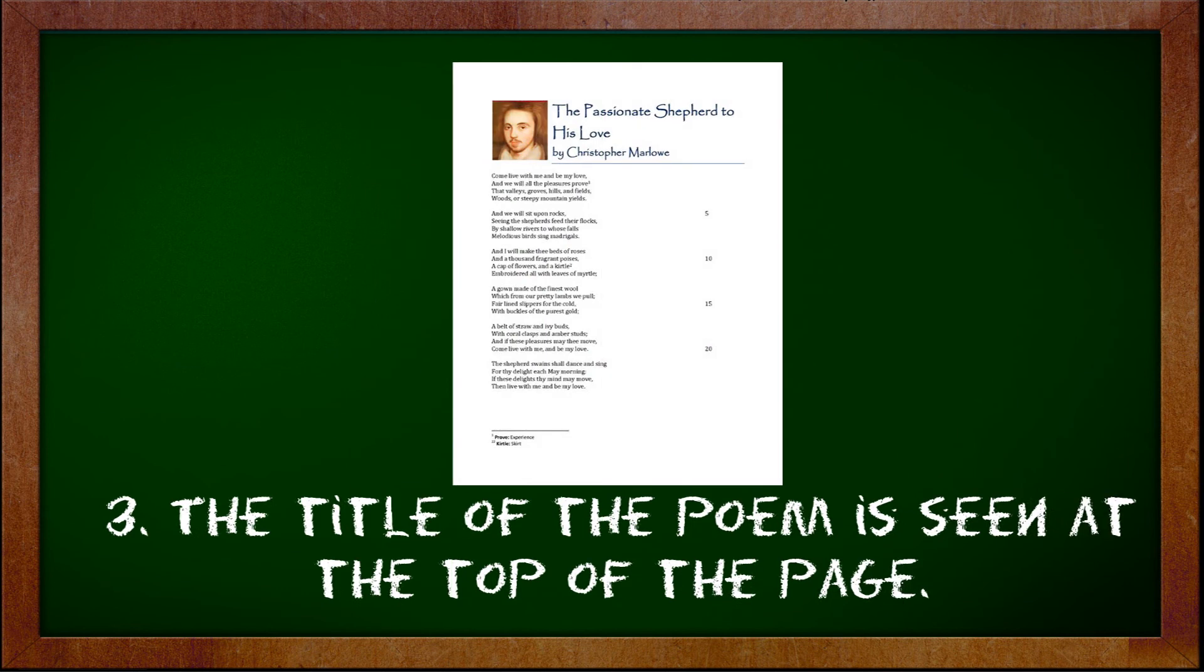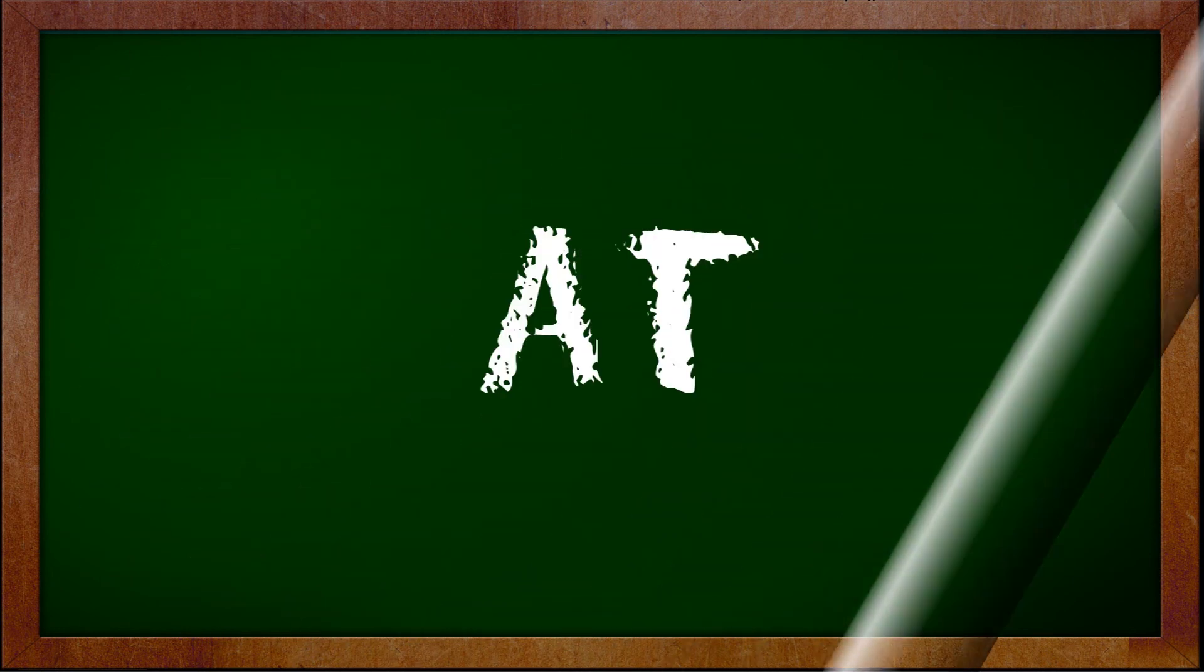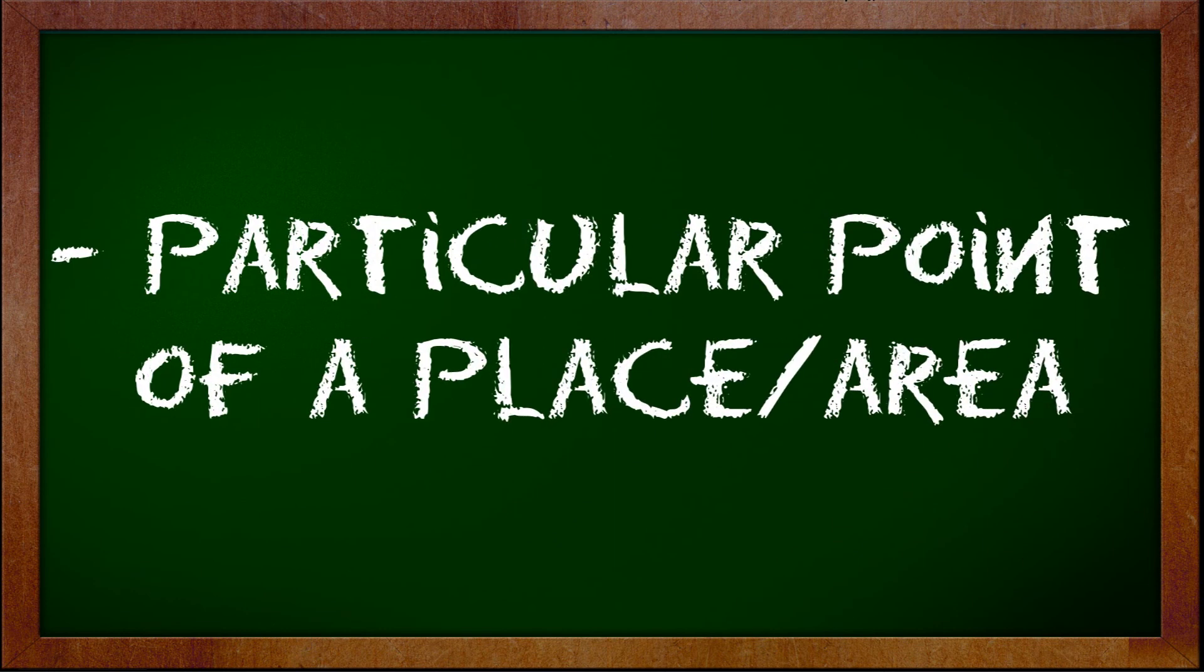Number three. The title of the poem is seen at the top of the page. The top of the page is a particular area or point of the page so we use the preposition at. Is it now clear with you the usage of the preposition at with place? Again, at is used to indicate a particular point of a place or of an area.